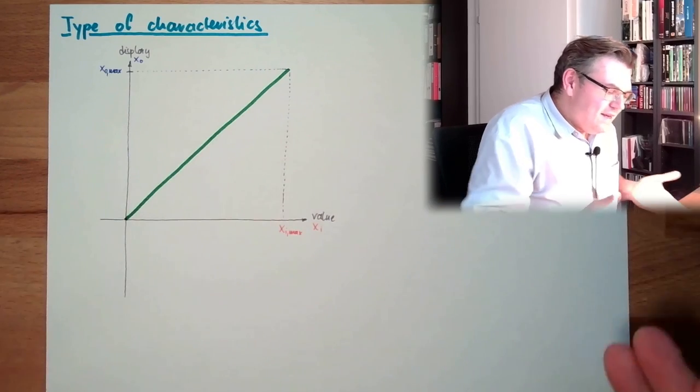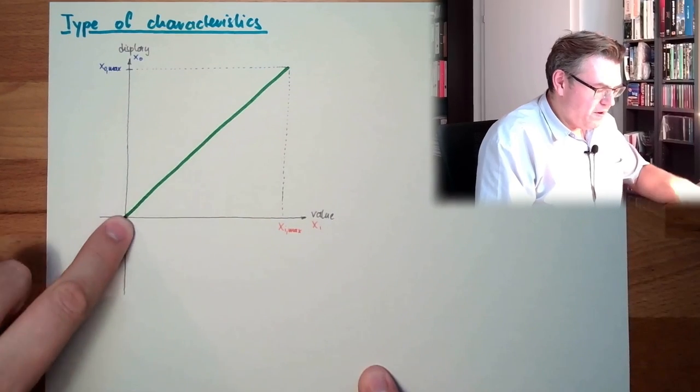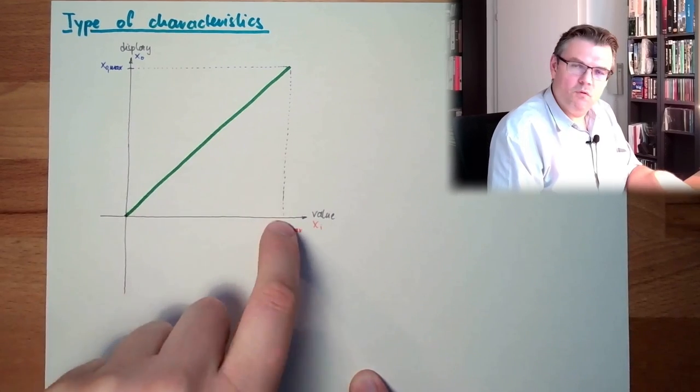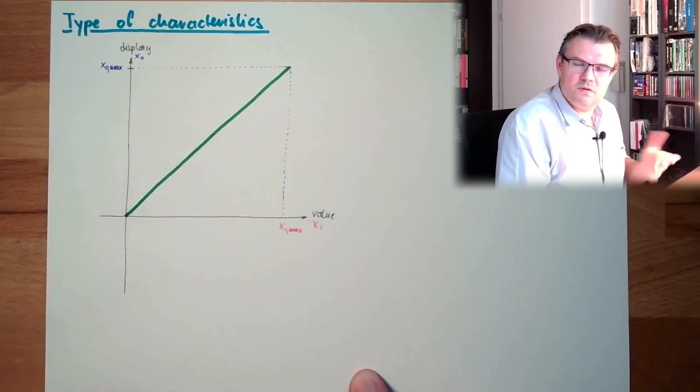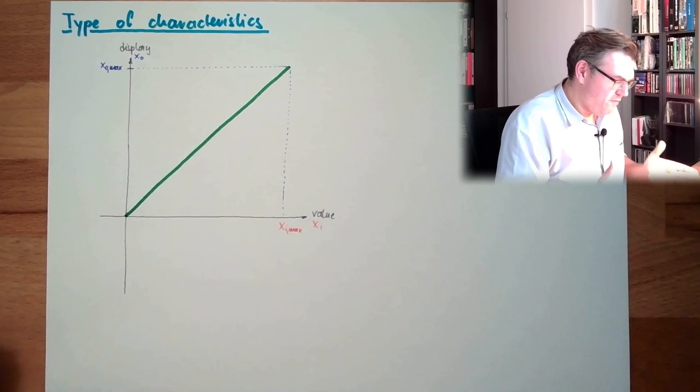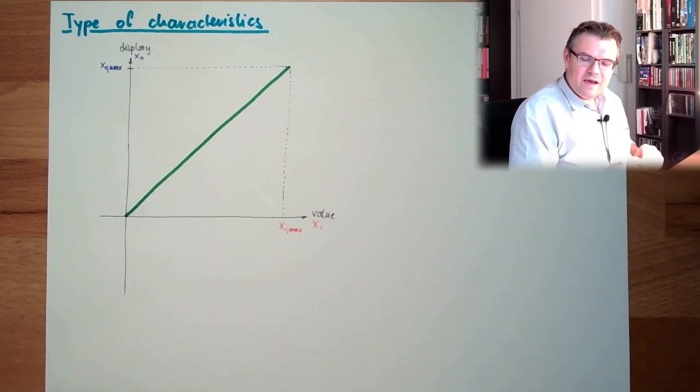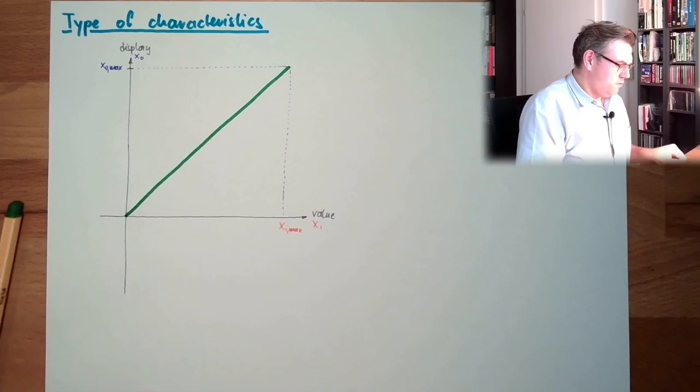Then, this is the most logical way here. If we have zero input, we have zero output. If we have half input, we have half output. If we have full input, we have full output. So linear behavior, this actually means, this is a linear characteristic through zero.